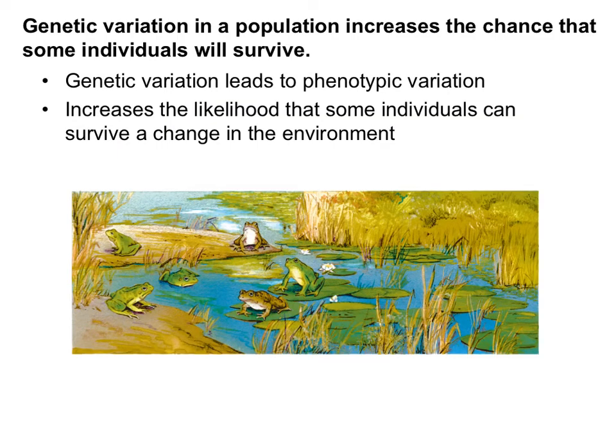Genetic variation is important in a population because it leads to phenotypic variation. The phenotype is the physical trait that you see. So these frogs in the image, their phenotype would be green and brown colored skin. Having different colors increases the likelihood that some individuals can survive a change in environment. If something occurred where one of those colors was at a disadvantage, at least the frogs with the other color could still survive.